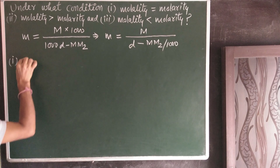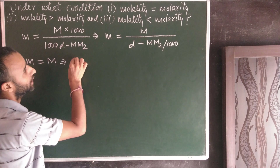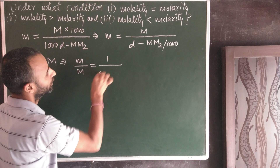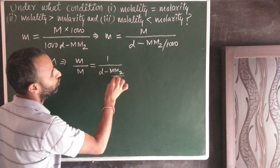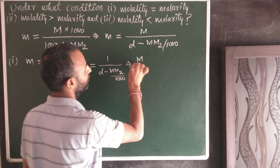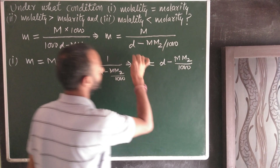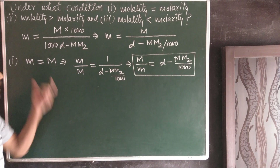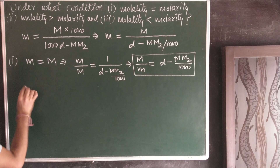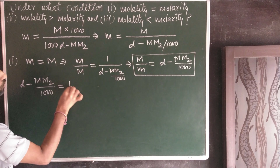First case: when molality is equal to molarity. Molality divided by molarity equals 1 divided by (D − M·M₂/1000), or capital M over small m equals (D − M·M₂/1000). If small m equals capital M, this part becomes equal to 1.